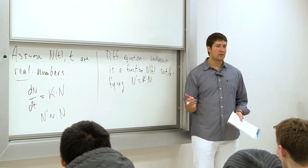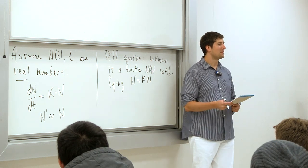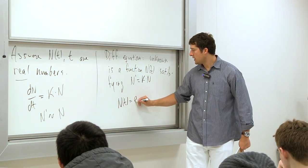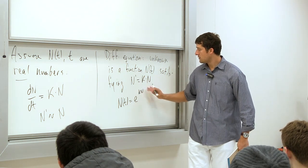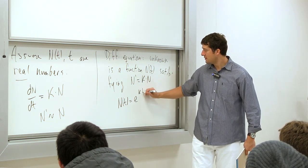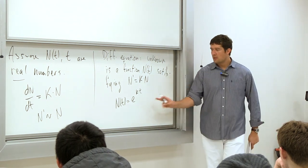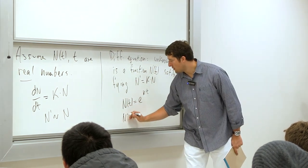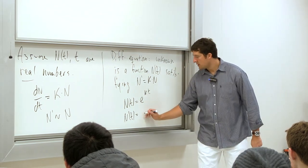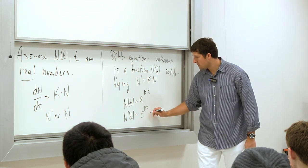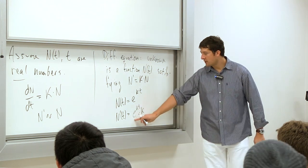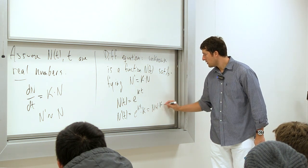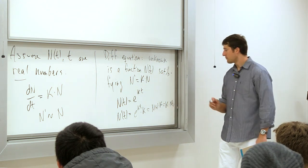Does anybody want to venture a function that satisfies this equation? The answer is N(t) = e^(kt). Let's verify: N'(t) = e^(kt) · k by the chain rule. And since e^(kt) is N, this equals kN. So it satisfies the ODE.